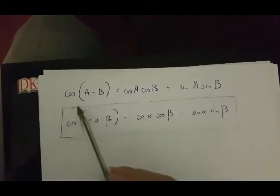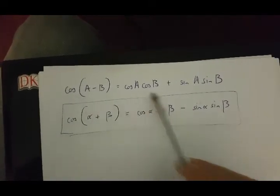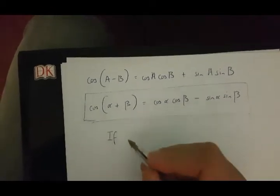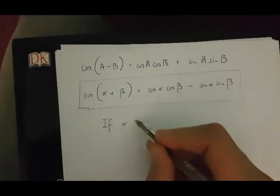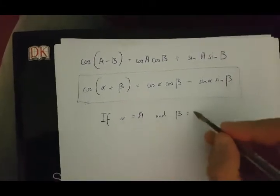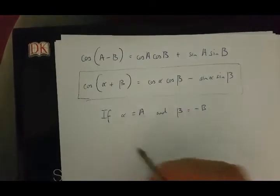Now we're going to start to prove that cos(A - B) equals this. To do this, we need to say that if alpha is equal to A and beta is equal to minus B,